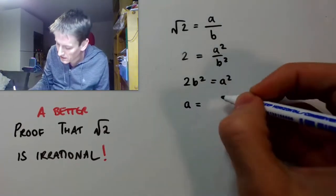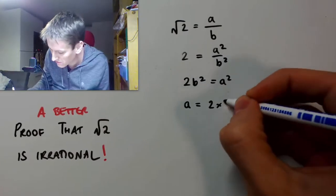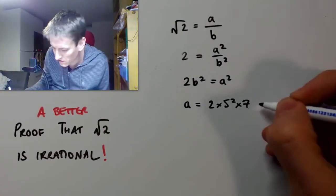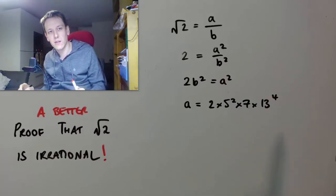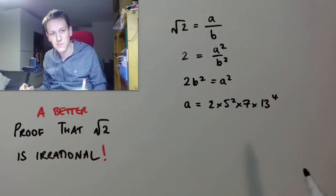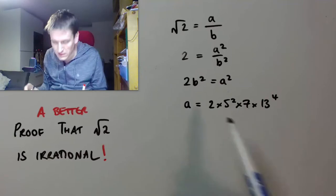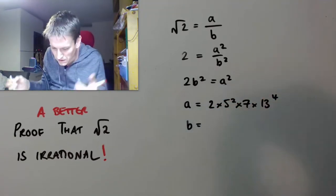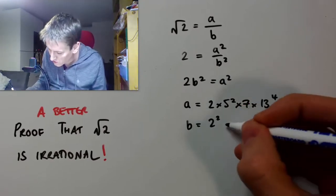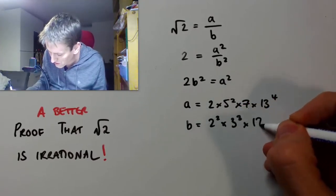Okay, so let's just say a as a number, like 2 times 5 squared times 7 times 13 to the 4. This could be any number, right? But I'm writing it down as its prime decomposition, its unique prime decomposition. And then b would be some other number, it could be anything. Let's say it's 2 squared times 3 cubed times 17.